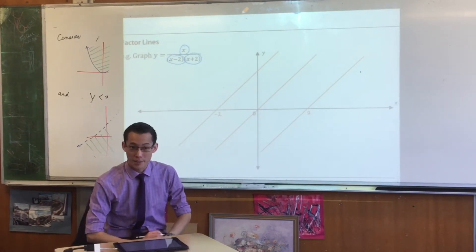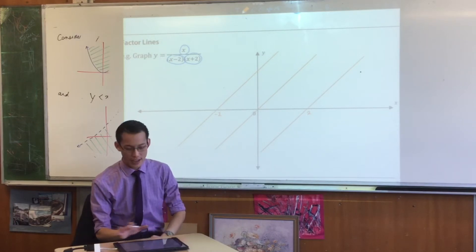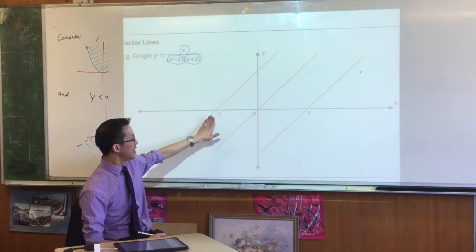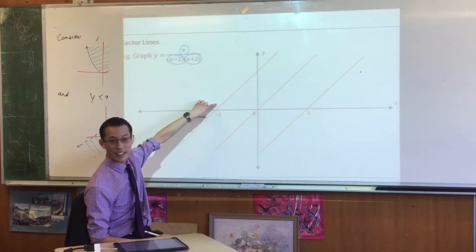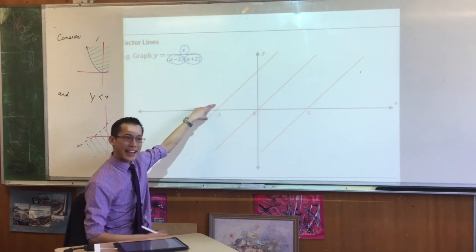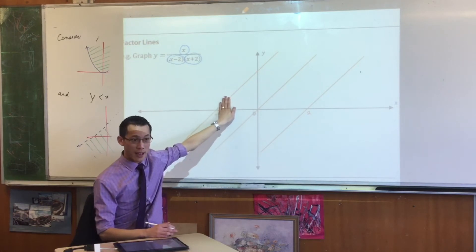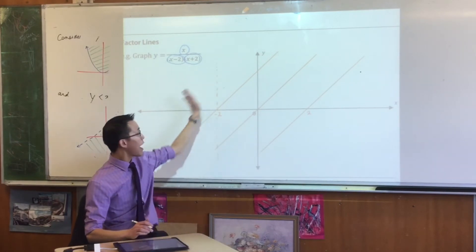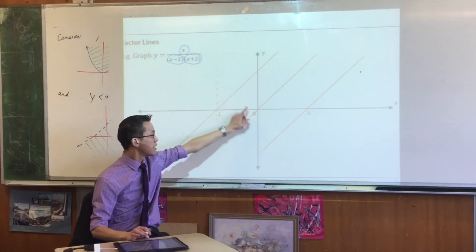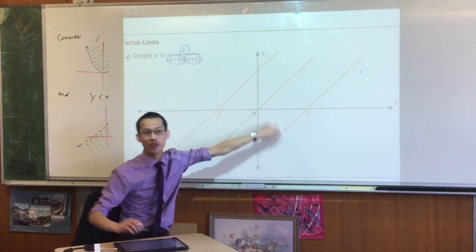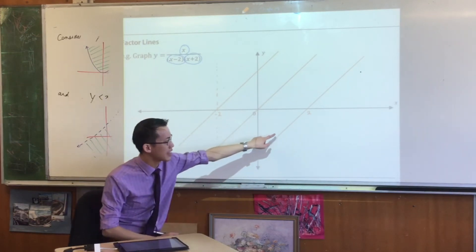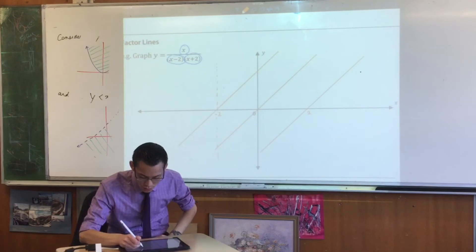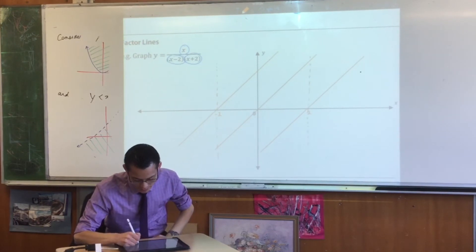Each of these is a factor that divides the graph into sections. From the left of negative 2 to the right, this factor y equals x plus 2 changes sign from negative to positive. So on the left of that one thing is happening and to the right something else is happening. The same thing happens at 0, and lastly for x minus 2, at 2 you have a change in sign. So I'm going to draw another line here.